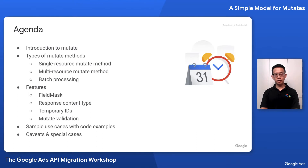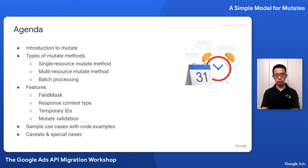This is the agenda for this presentation. I will start with the introduction to mutate, followed by the types of mutate methods, including single-resource mutate method, multi-resource mutate method, and batch processing. Then I will discuss features of the mutate — field mask, response content type, temporary IDs, and mutate validation. Finally, I will cover sample use cases with code examples, and end this presentation with caveats and special cases of the mutate.